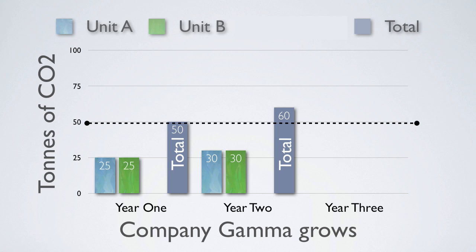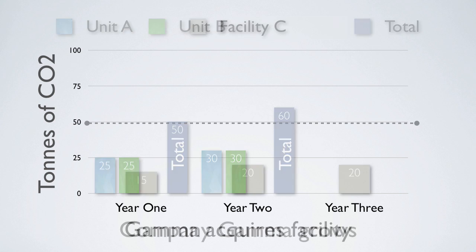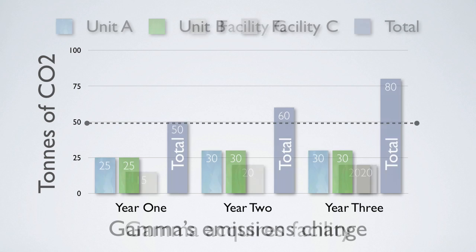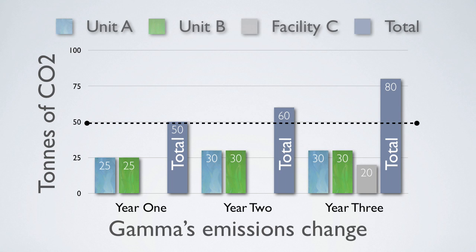Base year emissions are not recalculated in this case because organic growth does not trigger recalculation. At the beginning of year three, the company acquires production facility C from another company. The annual emissions of facility C in year one were 15 tons, 20 tons in year two, and 20 tons in year three. In year three, Company Gamma's total emissions, including facility C, were 80 tons.